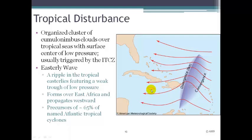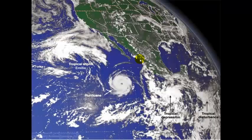Here we see the predominant wind flow, which is an easterly wave. We get a little ripple in the action and it causes a weak trough of low pressure. These usually form off of the eastern coast of Africa and then move towards the United States. These tropical disturbances are precursors of about 65% of the named Atlantic tropical cyclones.